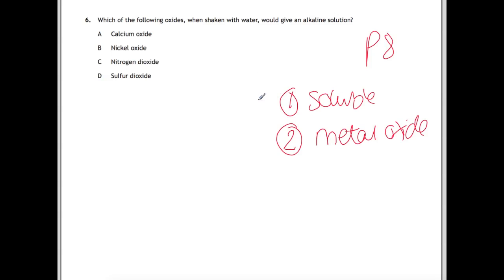Non-metal oxides will form acids. If we deal with our first one, we're looking for which ones would be soluble. Calcium oxide is soluble. Nickel oxide is insoluble. Then we have nitrogen dioxide and sulfur dioxide. If we have a look, they don't fit our second criteria because they are non-metal oxides so we can just score those out. And then that gives us our answer of A, calcium oxide.